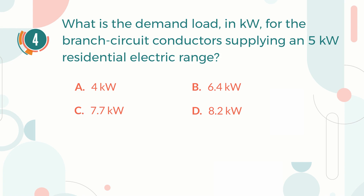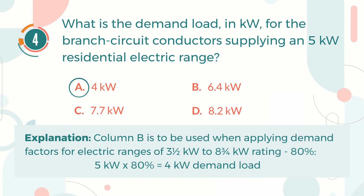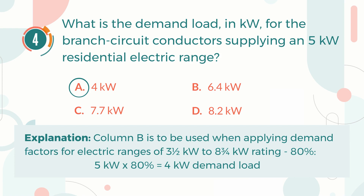The correct answer is A, 4 kW. Explanation: Column B is to be used when applying demand factors for electric ranges of 3.5 kW to 8.75 kW rating. 5 kW multiplied by 80% equals 4 kW demand load.